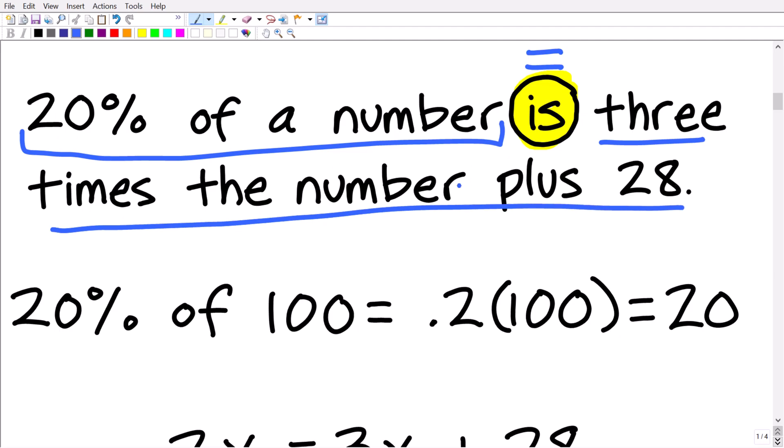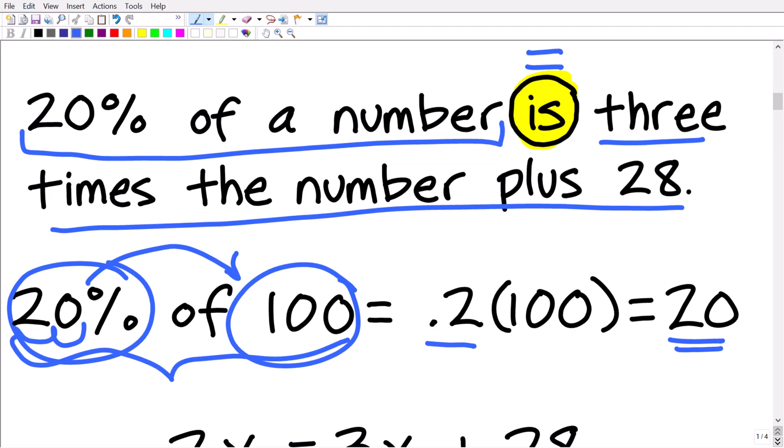So I'm going to get to how to translate this in just one second. But first, let's just do a quick review of basic percent. So if I asked you what is 20% of 100? Well, clearly, the answer is 20. But remember, when we're taking a percent of a number, what we're going to do is divide that number by 100 or move the decimal point over two places to the left. So 20% is the same thing as 0.2. And then we're going to multiply by that number. So just a quick review of basic percent. So 0.2 times 100, of course, is 20.